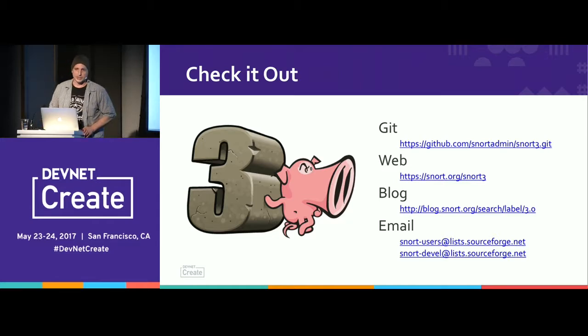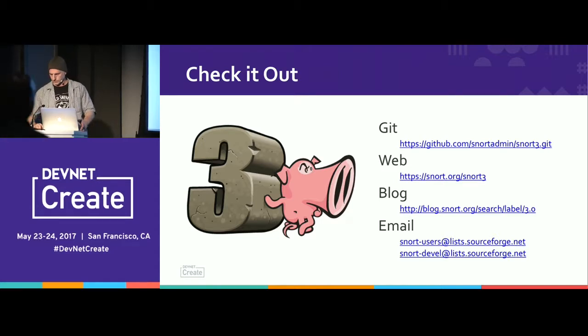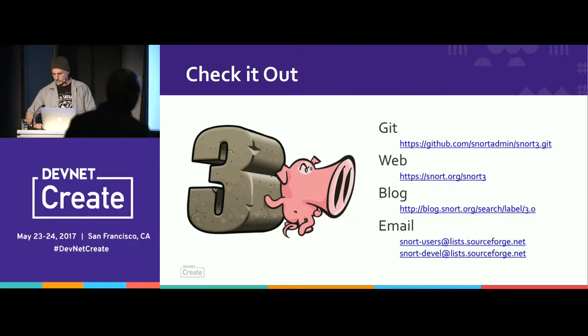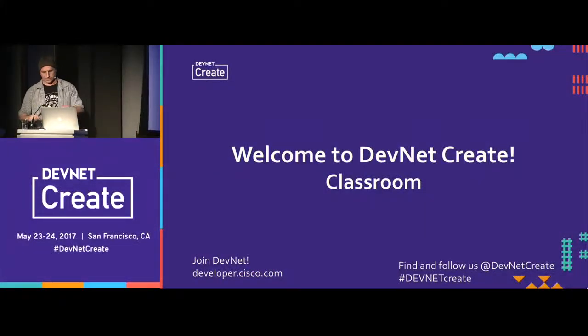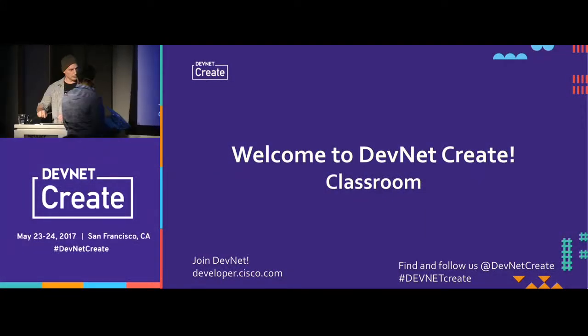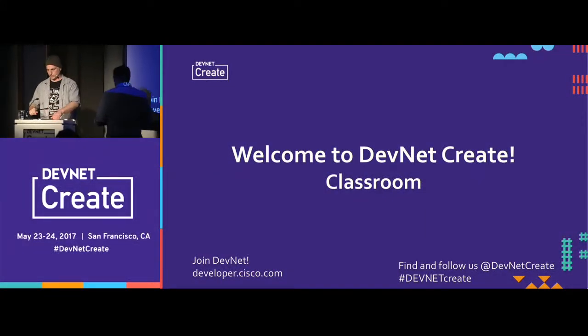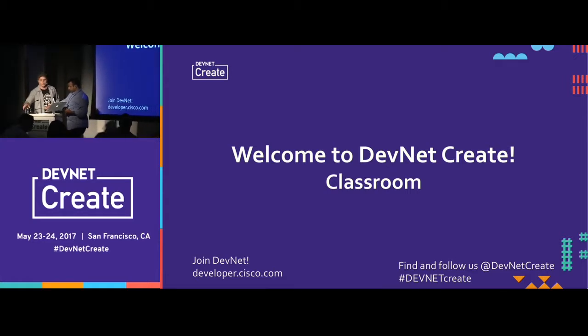If you're not already using Snort++, I urge you to check it out. You can get it from Git — the master branch is always a valid build point. We're also at snort.org/snort3, with blogs and email lists you can subscribe to. Any questions? Please raise your hand.